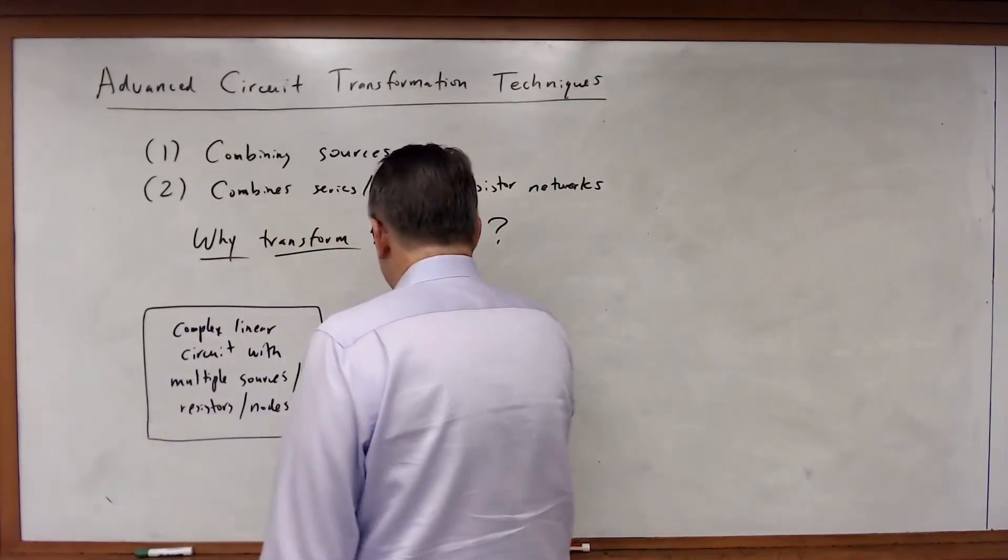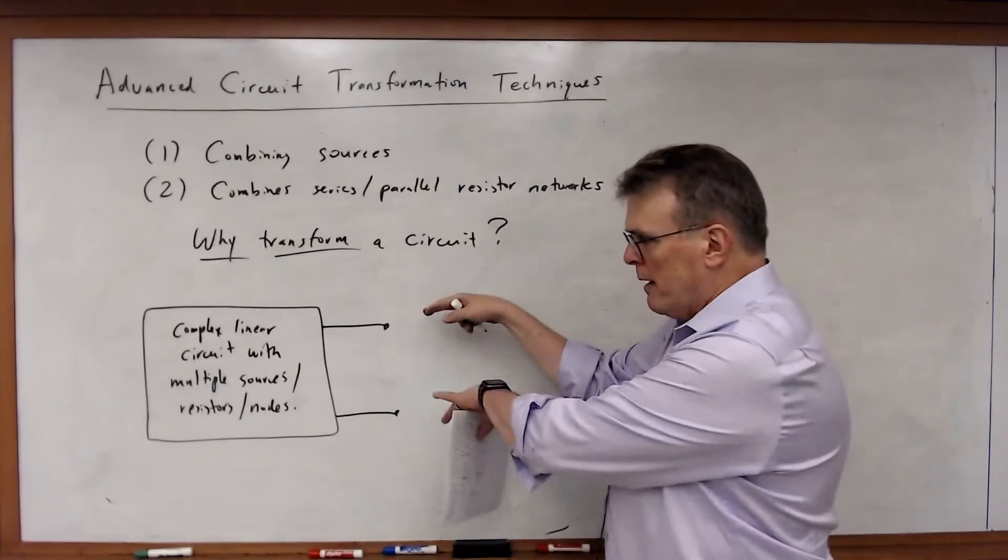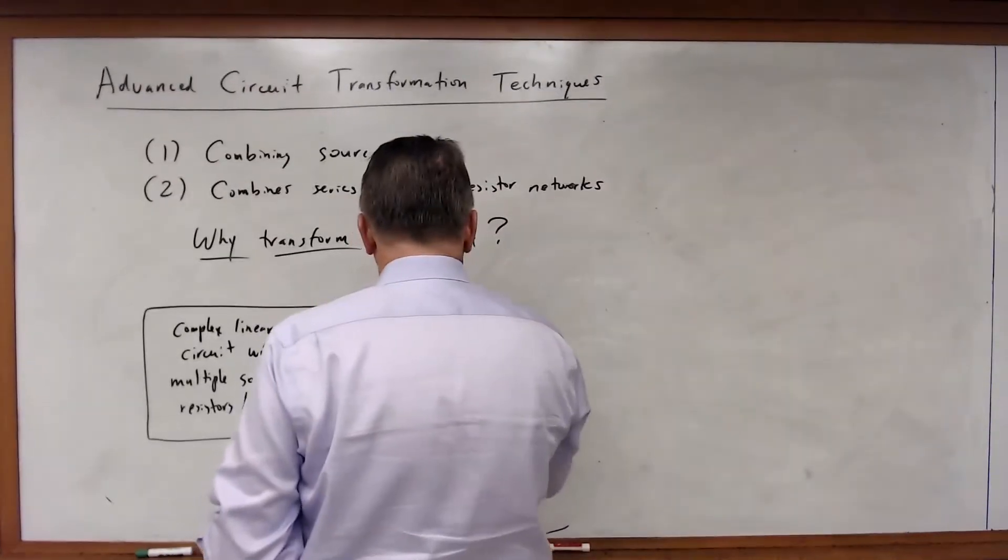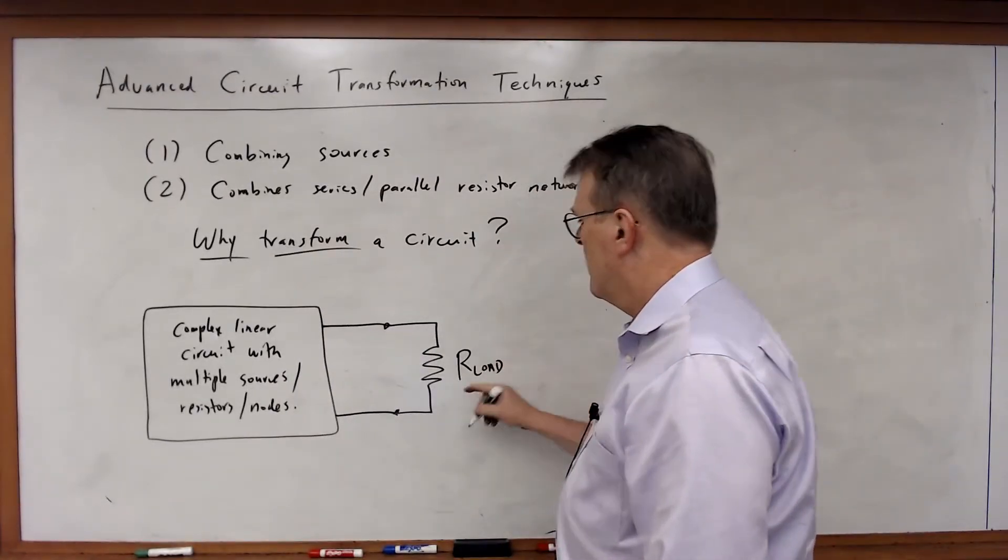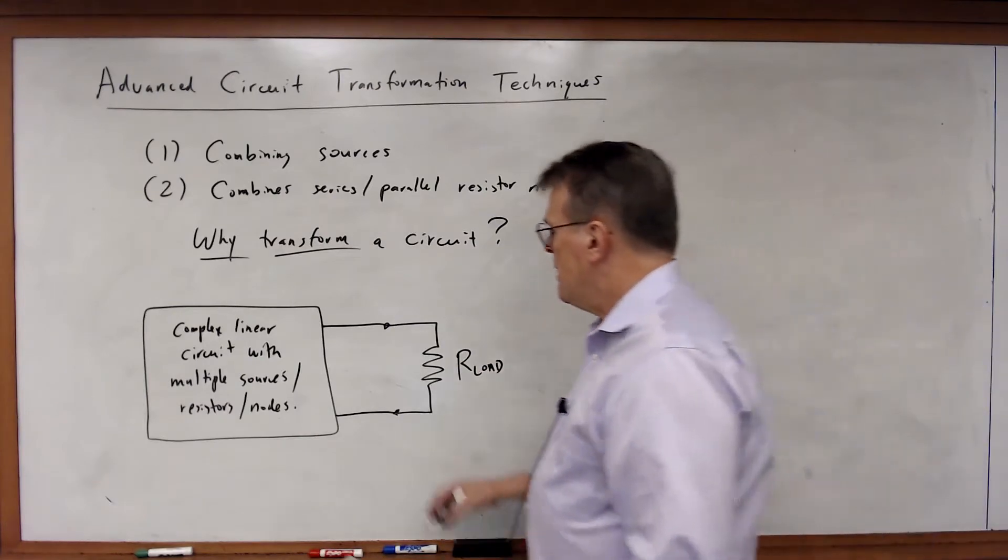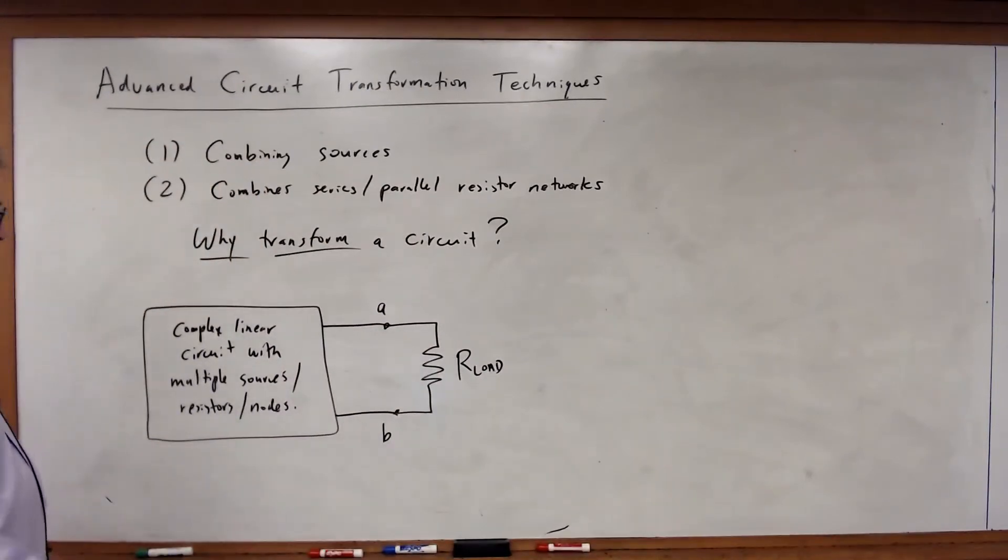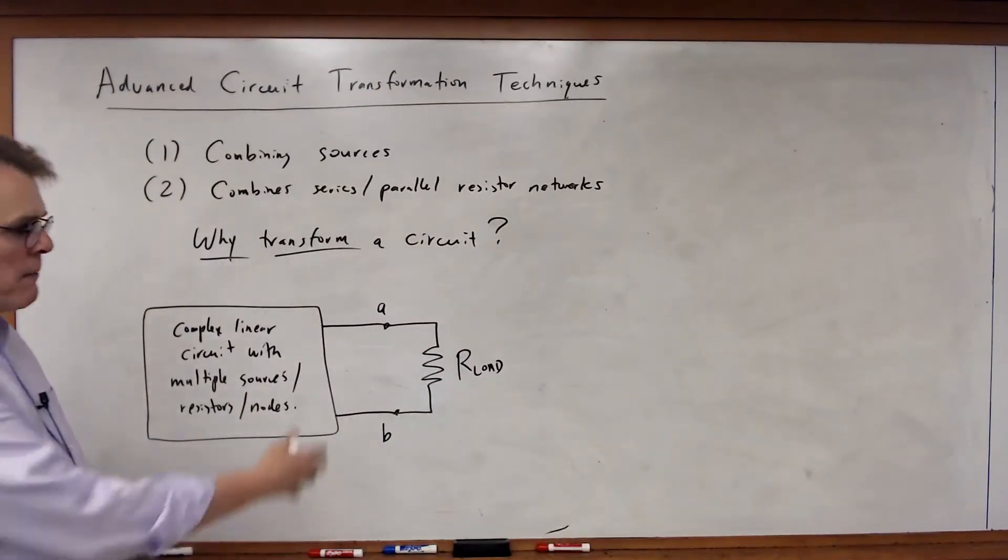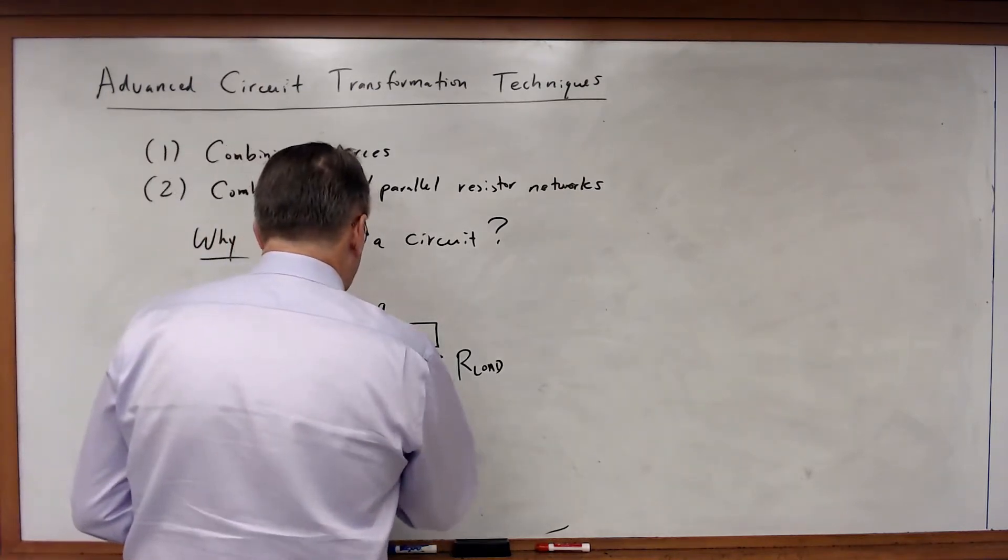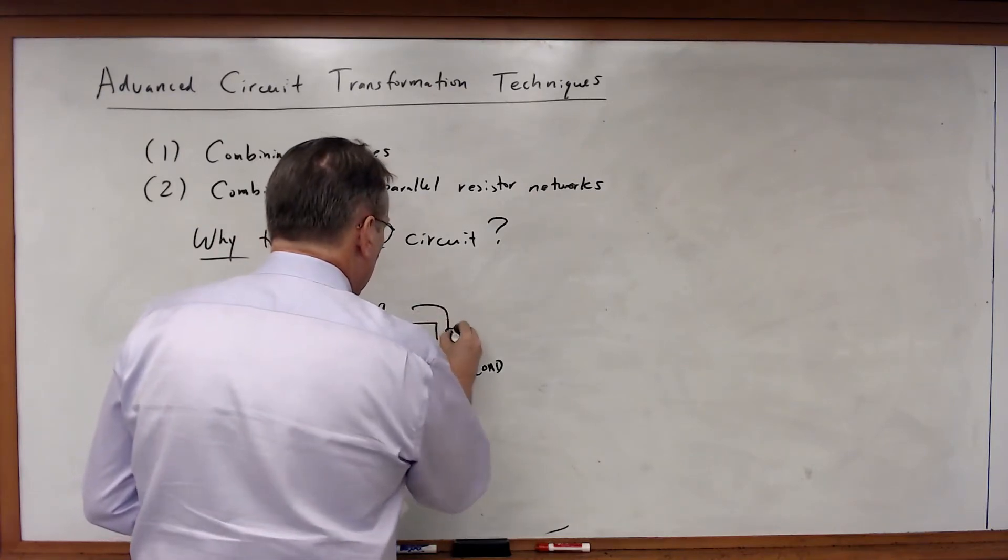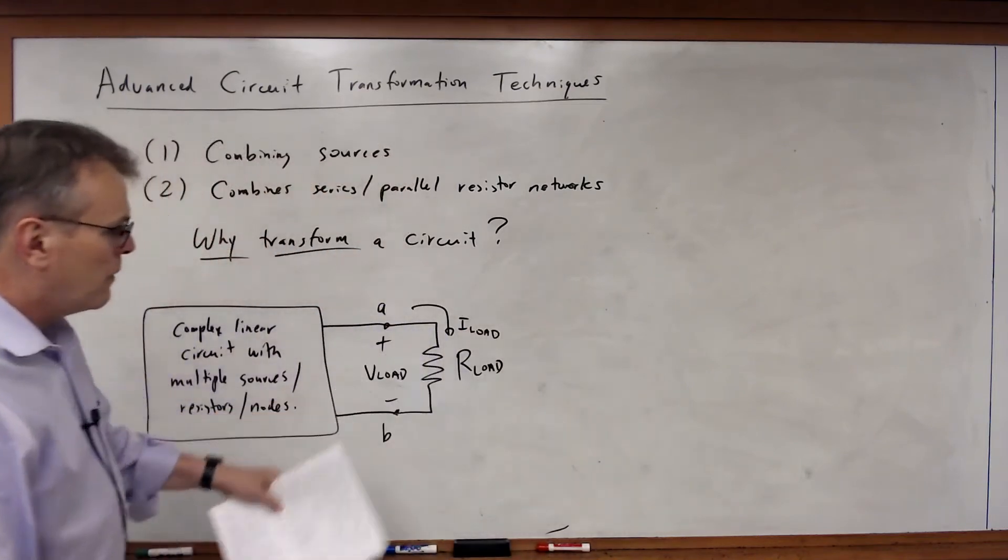And I'm going to connect a resistor to two nodes in that circuit. So I'm going to kind of pull a couple of wires out. And I'm going to connect a load resistor. I'm going to call that R-load to that circuit. I'm going to label these nodes A and B. And if I connect that resistor to this circuit, I'll be able to measure a voltage and current associated with that resistor. There'll be some voltage V-load I can measure. And there'll be some current I-load, which I can calculate using Ohm's Law.